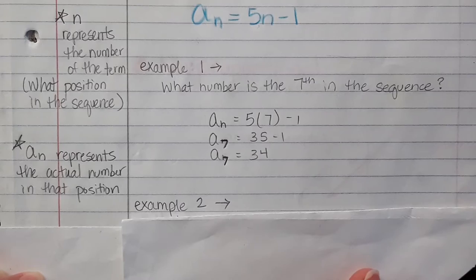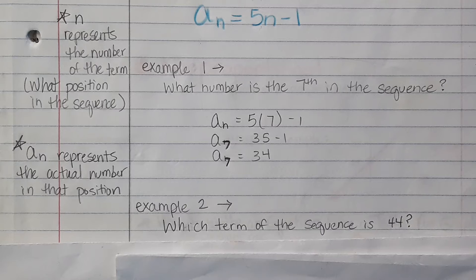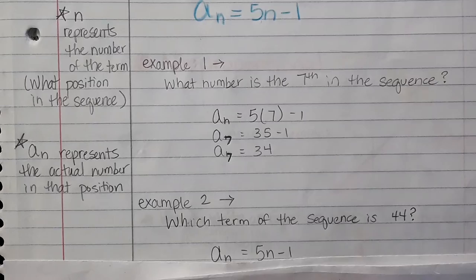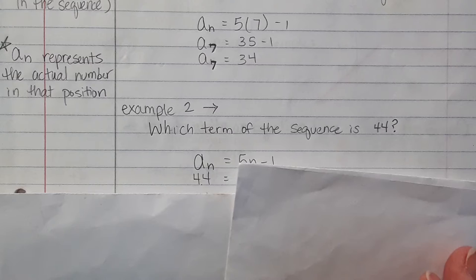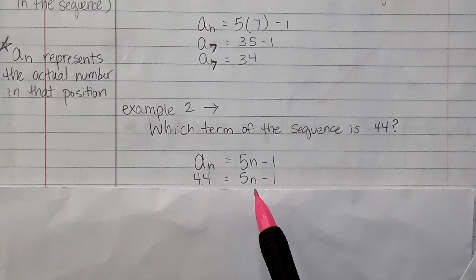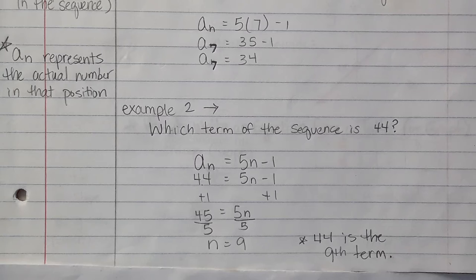Let's look at another example. Which term of the sequence is 44? Using the same a sub n equals 5n minus 1, what if I knew the number was 44 in the sequence? What position is that in? I'm going to use the same function for that example, but this time I know that the a sub n is 44. That's the number in the sequence. We're going to solve for n, because remember, n is the position in the sequence. So, solve for n, adding 1 to each side, and then divide by 5, and we get that n is 9.